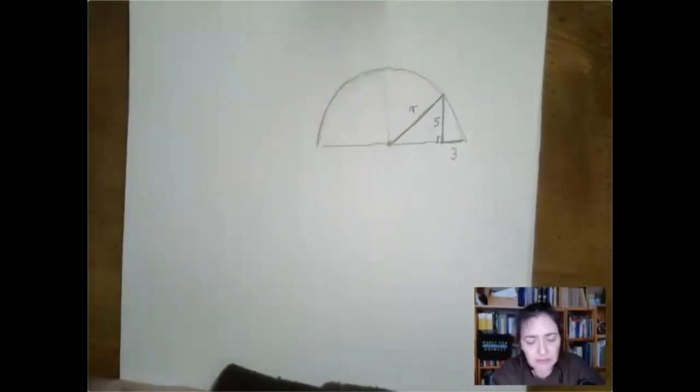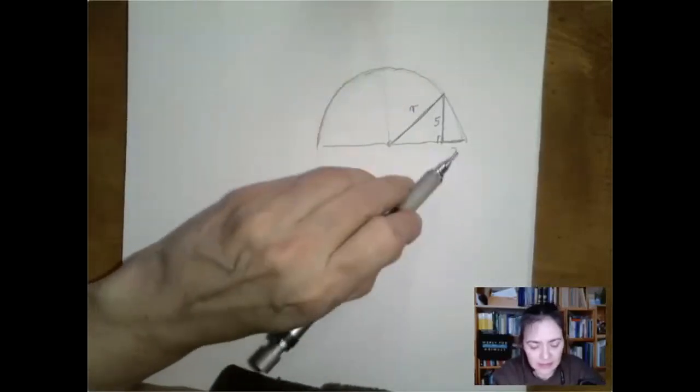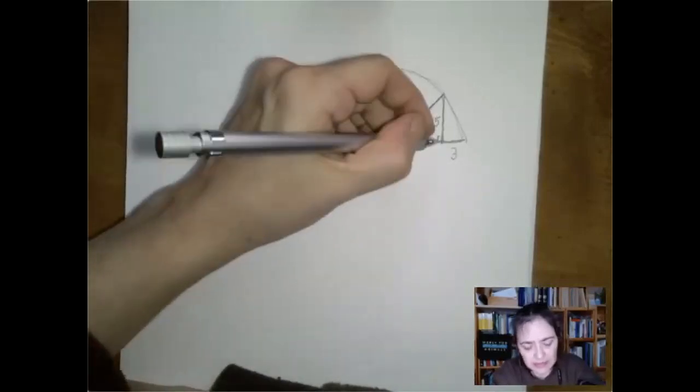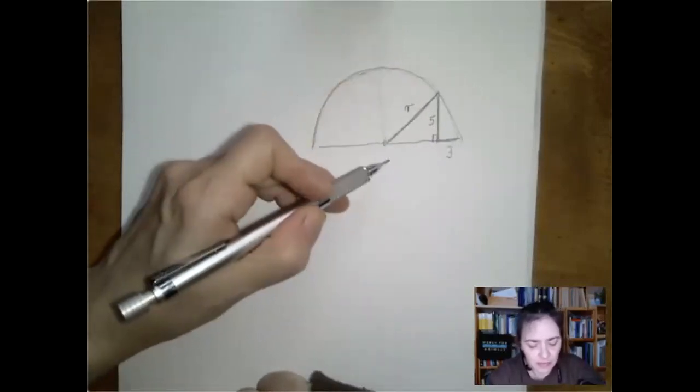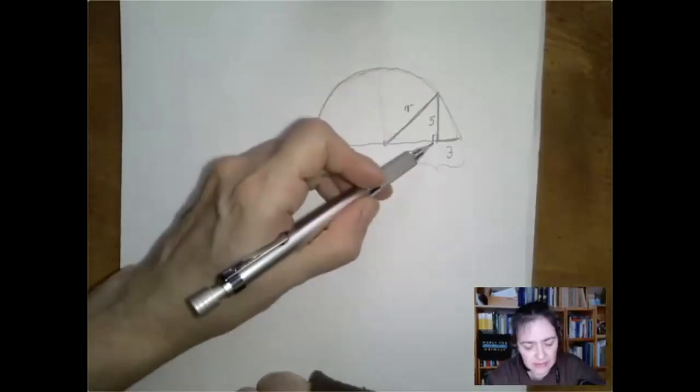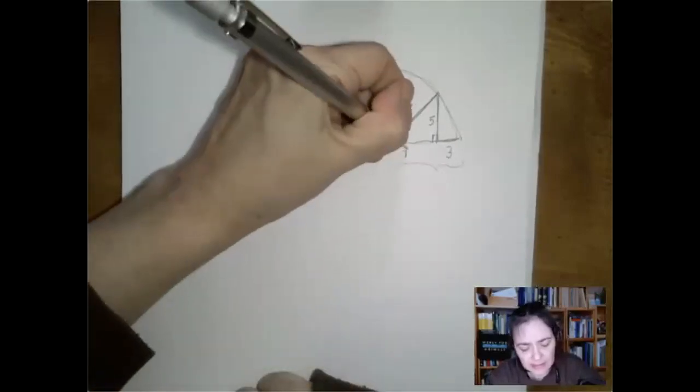The hypotenuse is what we're looking for, the radius. And I guess the tricky part in this question is to recognize that if this whole thing here is the radius, then this is the radius minus three.